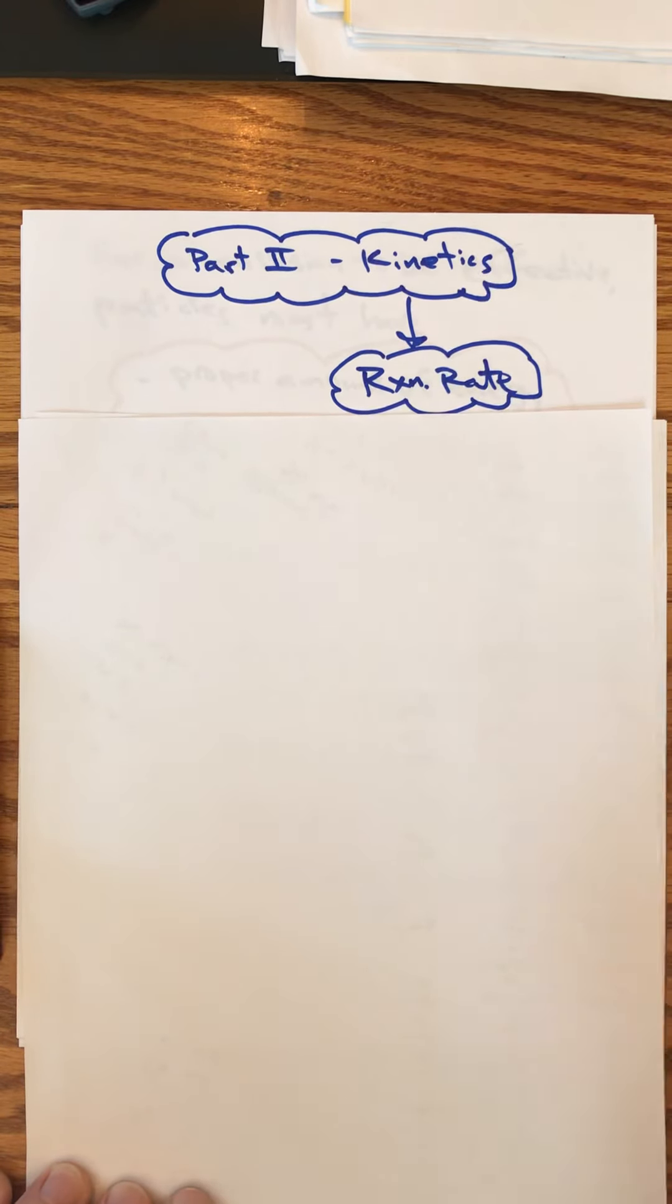These are things you either want to memorize or write down somewhere so you remember them - factors that can affect the rate of a reaction, how they affect it and why they affect it.